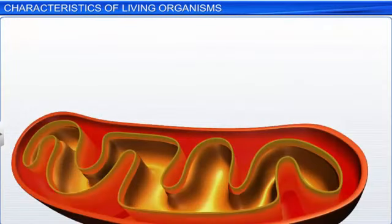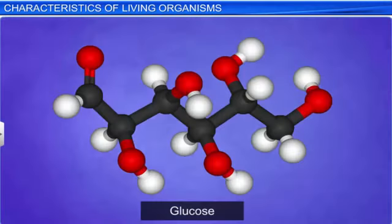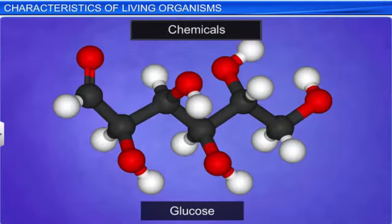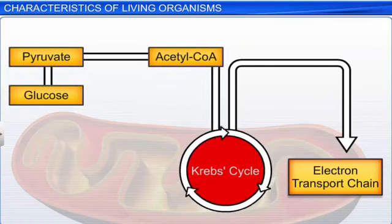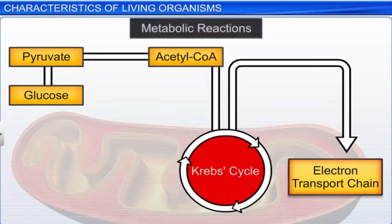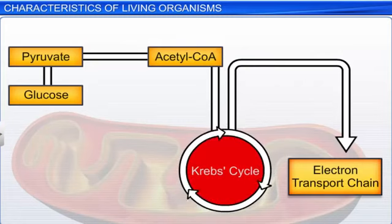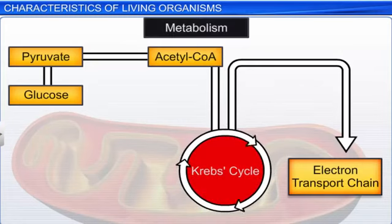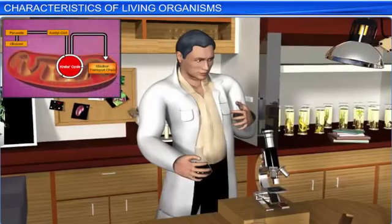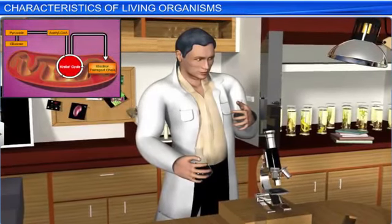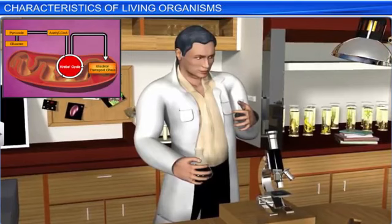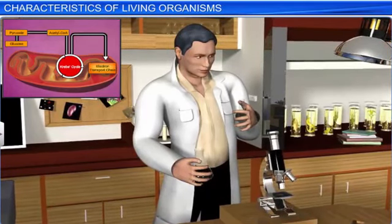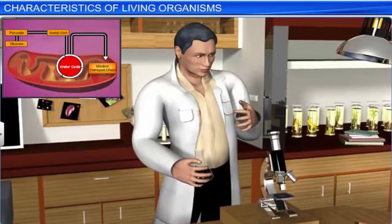Metabolism is also a characteristic of living organisms. We know that organisms are made up of chemicals. These chemicals are constantly produced in living beings and converted into biomolecules. These conversions are called chemical or metabolic reactions. The sum total of all such reactions is known as metabolism. It is interesting to note that such chemical reactions can also be imitated in a laboratory. However, such isolated reactions taking place in vitro are not considered living organisms, but are classified as living reactions.